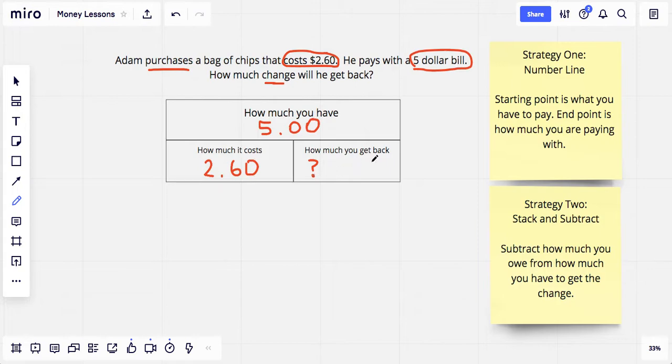The first strategy we're going to use is a number line, which we have used throughout the year. In the number line, we usually have a starting point and an end point, and that is what we're going to find out. So our starting point is $2.60. This is the money that Adam is going to give up. And from $2.60 all the way to $5 is Adam's change. That's what he deserves back.